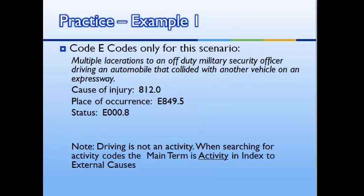Our final slide shows all the E-codes together. Notice that although driving is not an activity, if you did have an activity that had an activity code — such as playing baseball or riding a bike — then you would search under A for activity. Congratulations on learning to assign E-codes. You will practice coding other scenarios in the exercises provided.